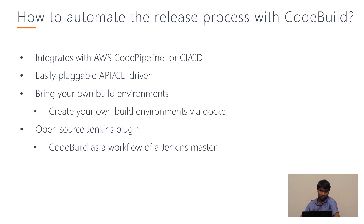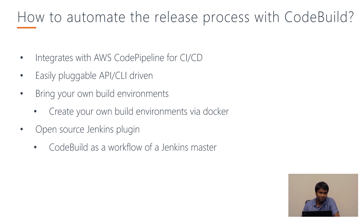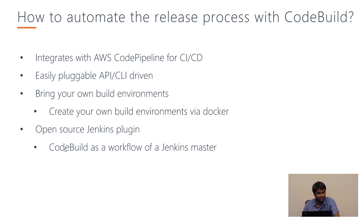We can integrate AWS CodeBuild with AWS CodePipeline for CI/CD — it is easily pluggable and API/CLI-driven. We can create a CodeBuild project in about five minutes if we know what to do. We can configure our own build environments via Docker. It even has an open-source Jenkins plugin — if you have an on-premise build server, CodePipeline and CodeBuild can trigger actions on that Jenkins server and get the output. We can also have CodeBuild as a workflow for Jenkins master on our Jenkins server.